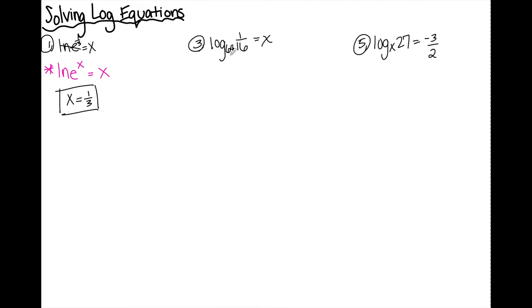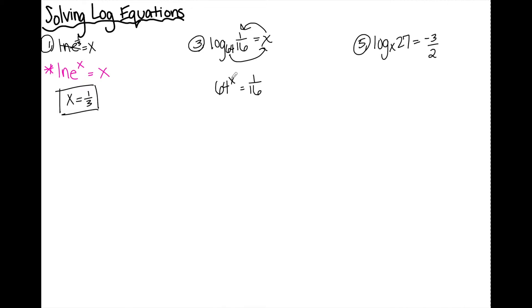Number three: log base 64 of one over 16 is equal to x. I'm going to rewrite this in exponential form to help figure this out. I always start at the base and then hop around the equal sign. So 64 to the x is equal to one over 16. I have to think: what exponent can I raise 64 to and get one over 16? Since I have a fraction, I know that exponent is going to be negative.